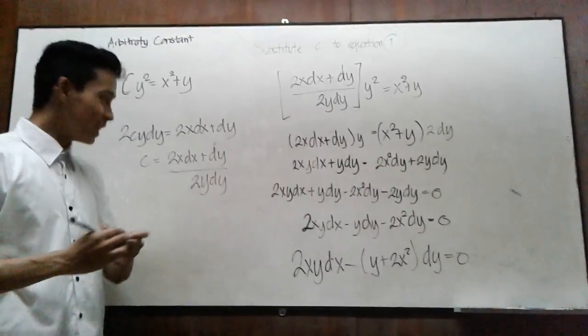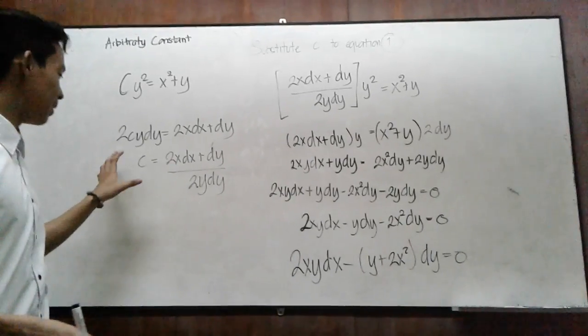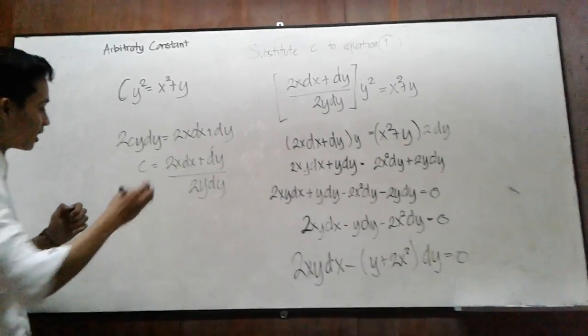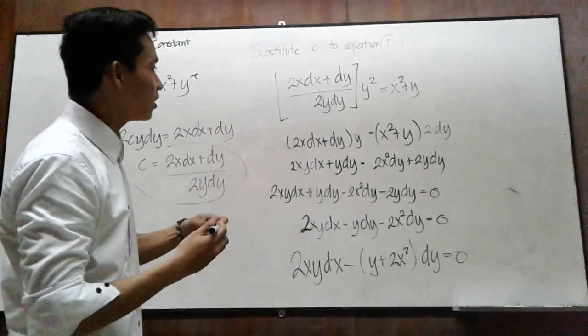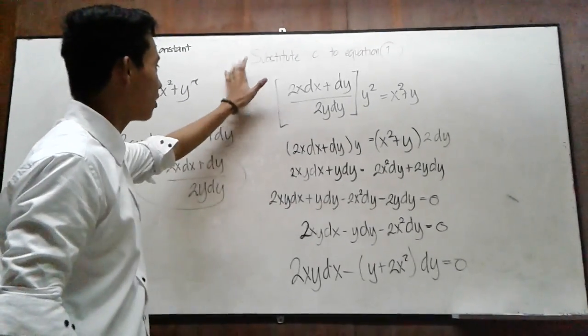To eliminate the arbitrary constant, you simply substitute C in equation 1.